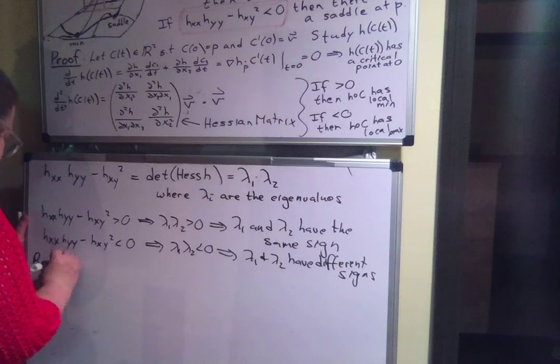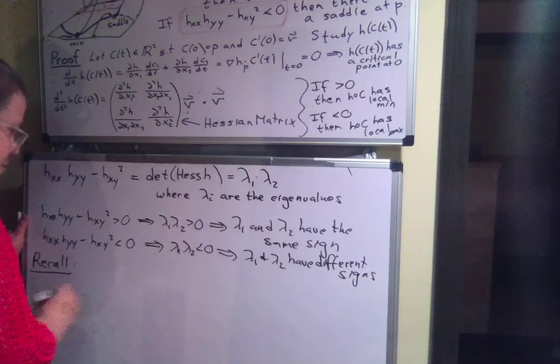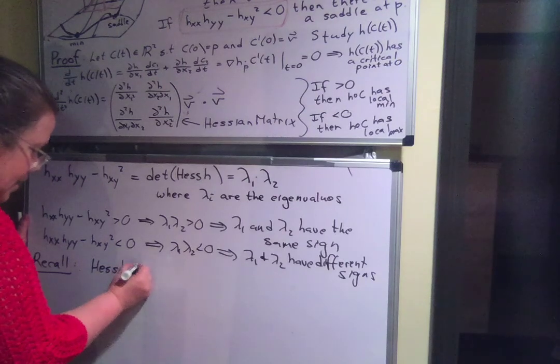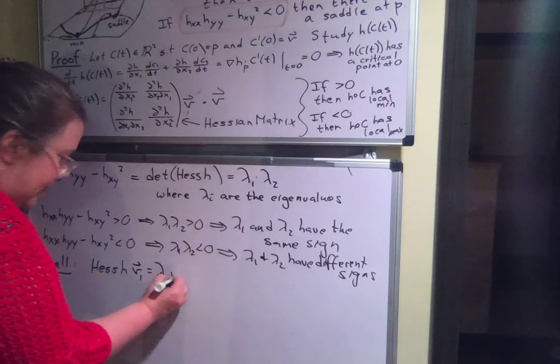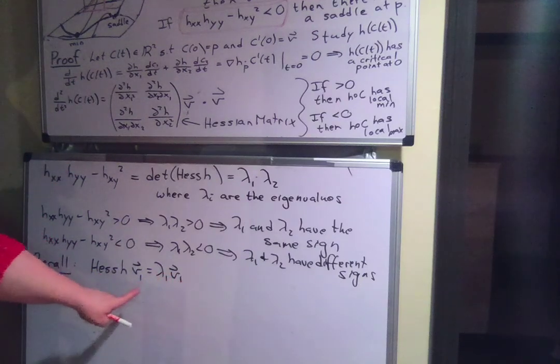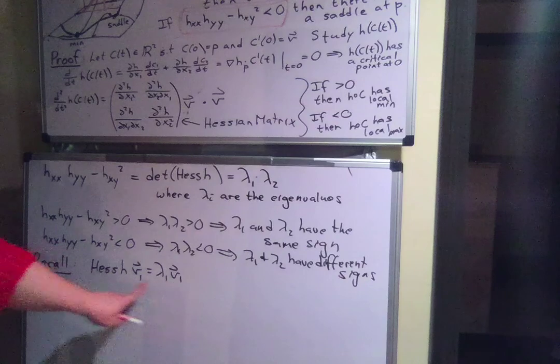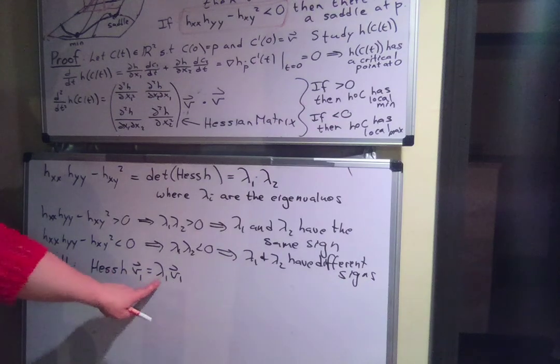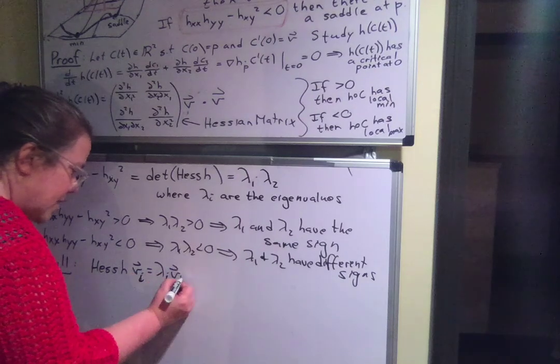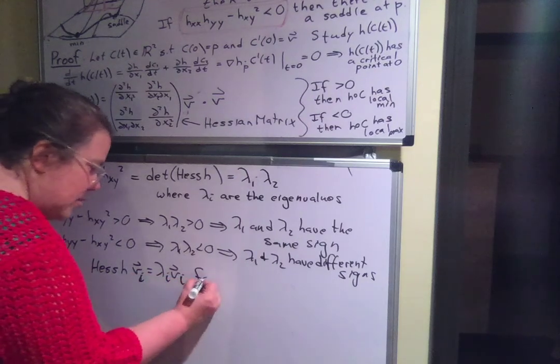Hessian H times v1 equals lambda 1 v1. That's what it means to be an eigenvalue. An eigenvalue is a value, a real number such that there's an eigenvector. The matrix times the eigenvector equals lambda 1 times the eigenvector. And we also have for i equals 1 and 2.